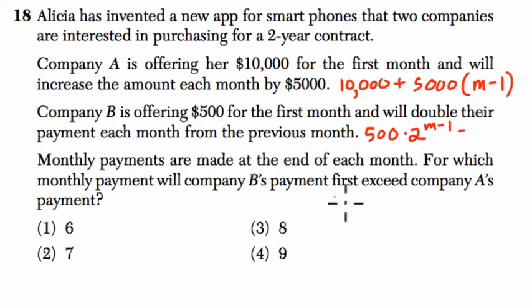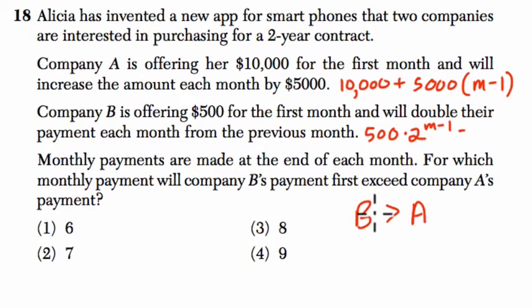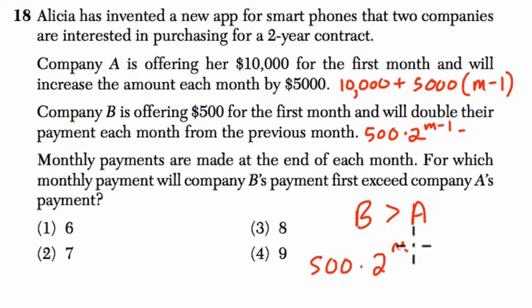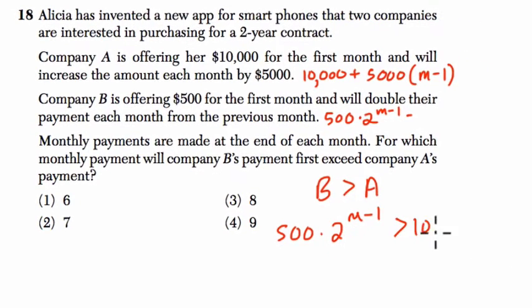They want to know when does Company B become greater than Company A — when are Company B's payments larger than A's? So that would be: when does 500 times 2 to the (m minus 1) become larger than 10,000 plus 5,000 times (m minus 1)?